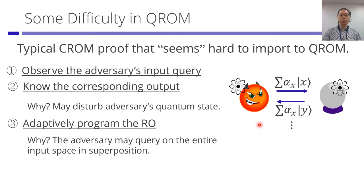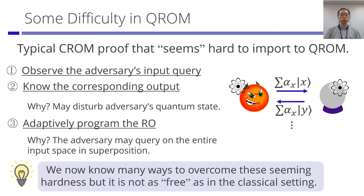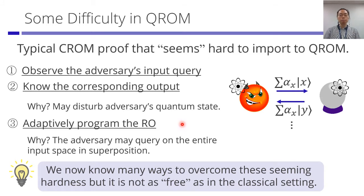Another issue is adaptively programming the random oracle, because the quantum adversary may query all inputs in superposition simultaneously. At that point, the random oracle seems to be defined on all outputs, meaning there's no notion of adaptively programming it as the game progresses. These are seemingly very difficult problems. In the past two or three years, there has been a lot of work on overcoming them, but they do not come for free as in the classical ROM and require a lot of additional complications.